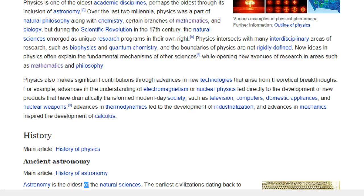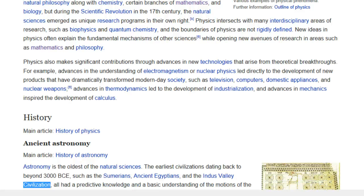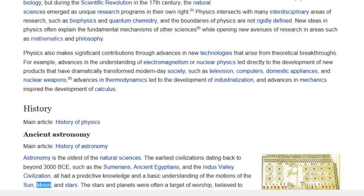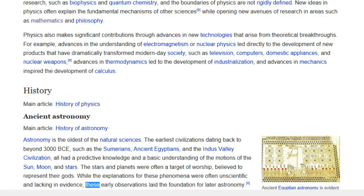Ancient Egyptian astronomy is evident in monuments like the ceiling of Senemut's tomb from the 18th dynasty of Egypt. Astronomy is the oldest of the natural sciences. The earliest civilizations dating back to beyond 3000 BCE, such as the Sumerians, ancient Egyptians, and the Indus Valley civilization, all had a predictive knowledge and a basic understanding of the motions of the sun, moon, and stars. The stars and planets were often a target of worship, believed to represent their gods.